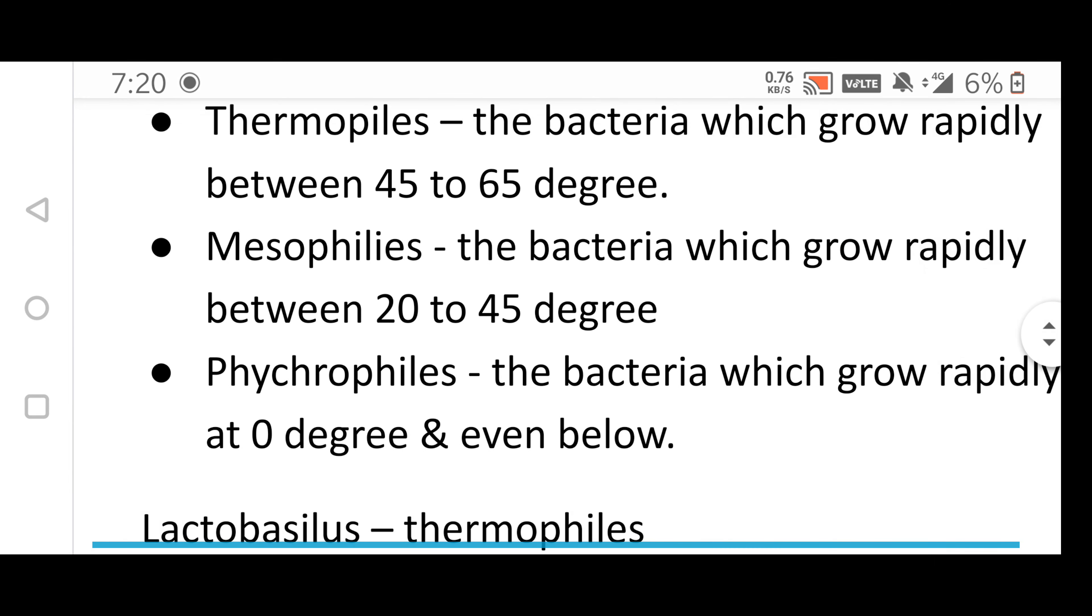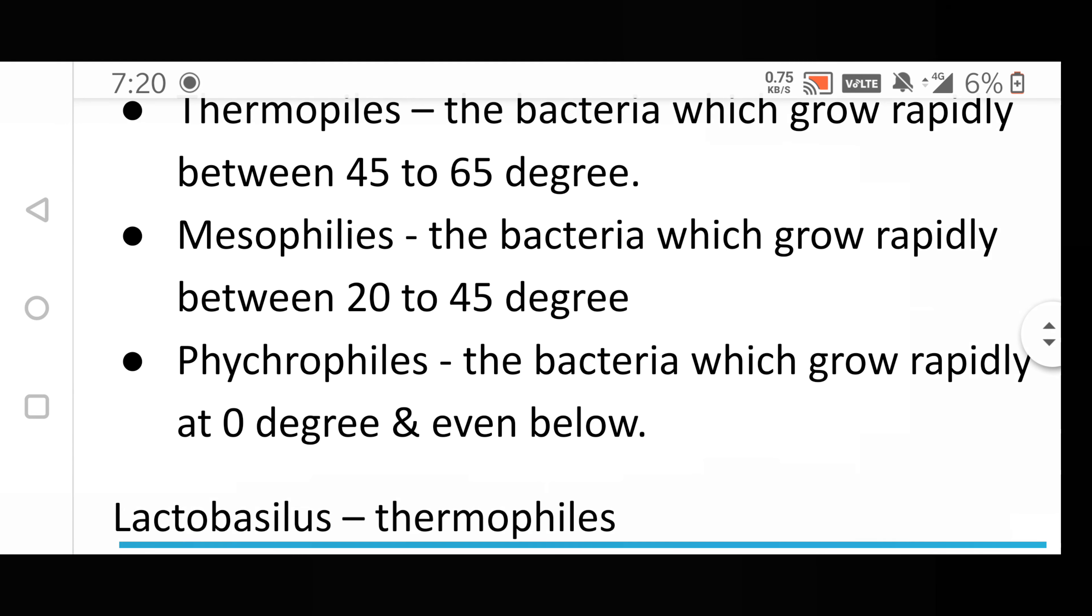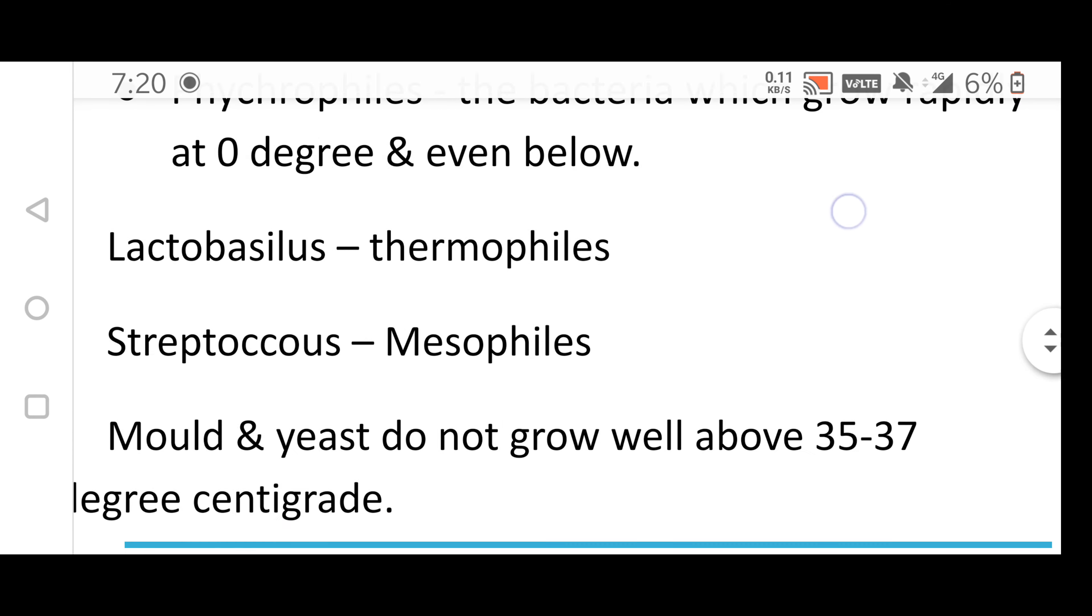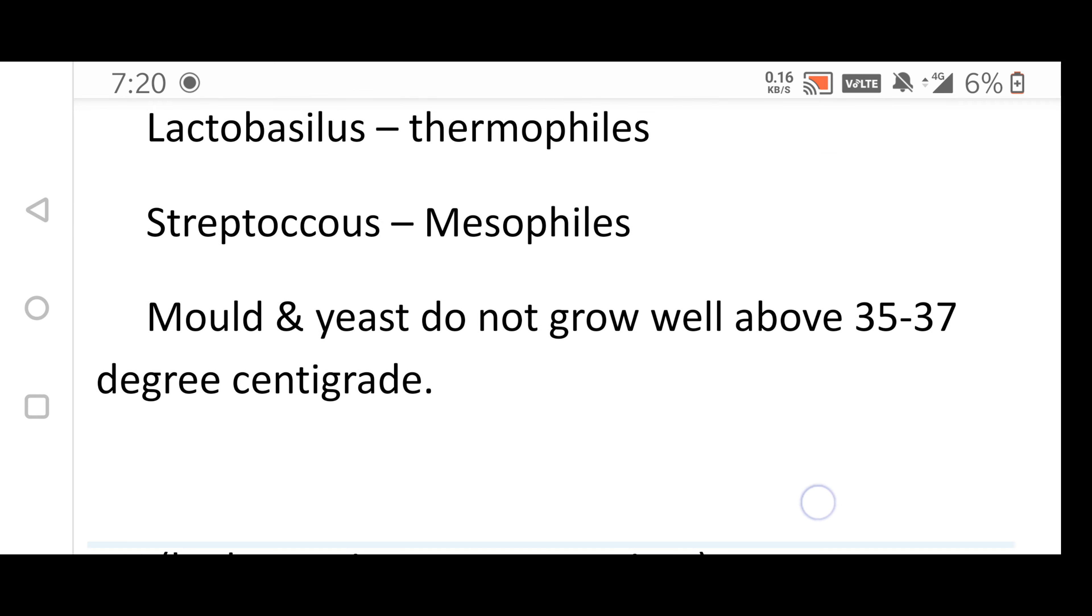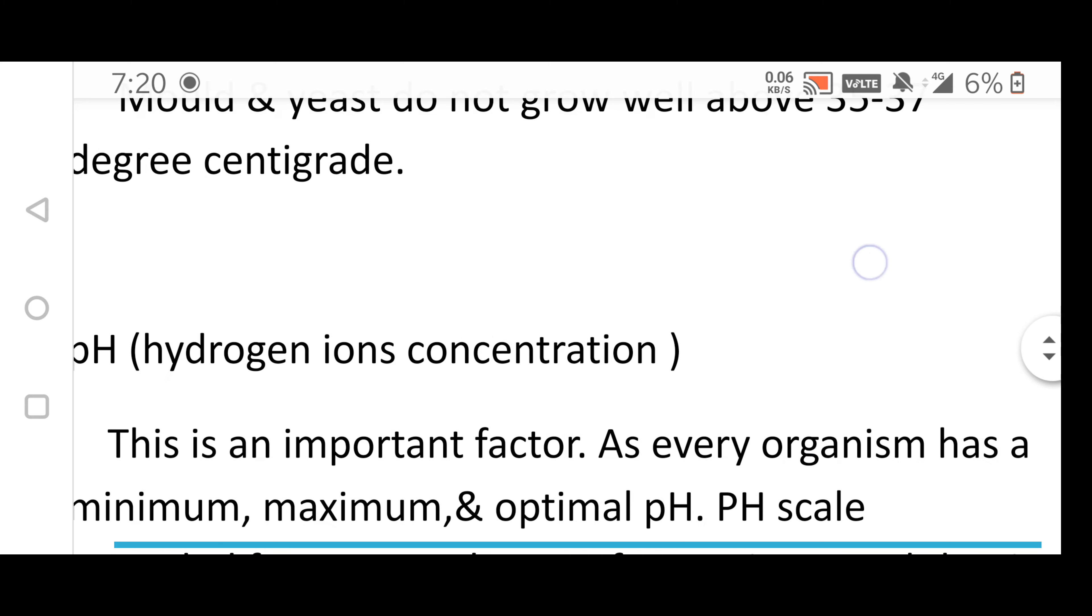Thermophiles: bacteria which grow rapidly between 45 to 65 degrees. Mesophiles: bacteria which grow rapidly between 20 to 45 degrees. Psychrophiles: bacteria which grow rapidly at 0 degrees and even below. Examples include Lactobacillus (thermophile) and Streptococcus (mesophile). Mold and yeast do not grow well above 35 to 37 degrees Celsius.